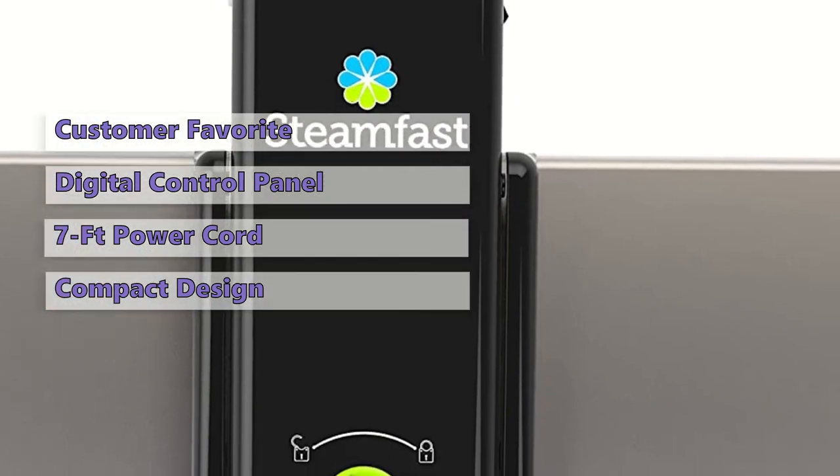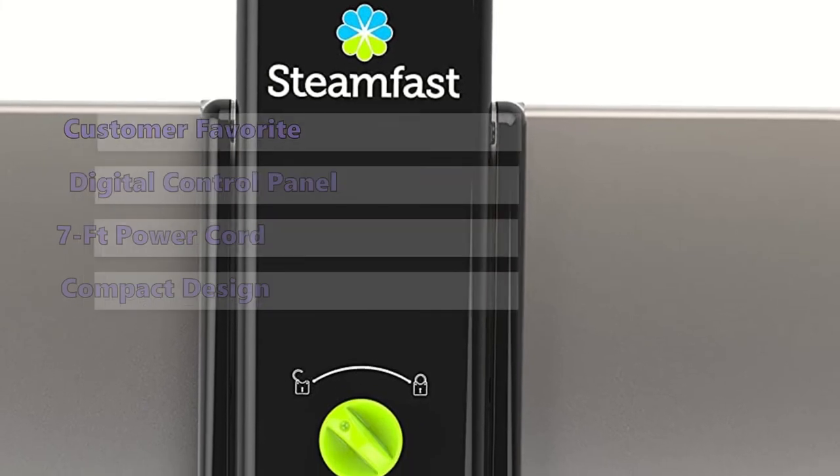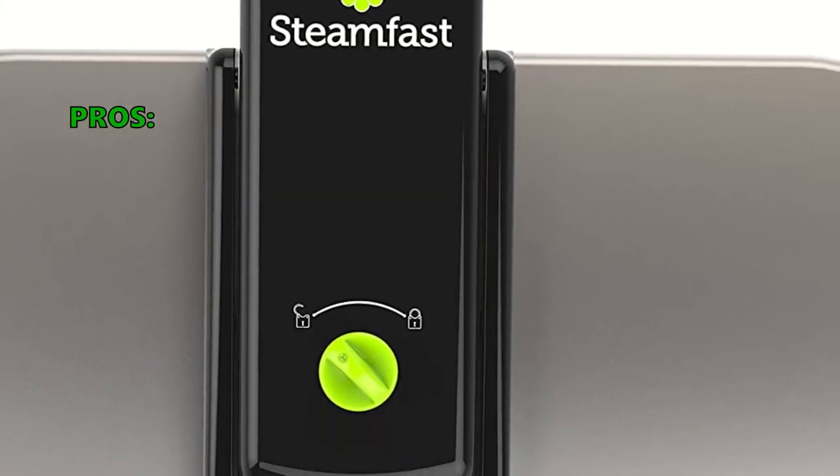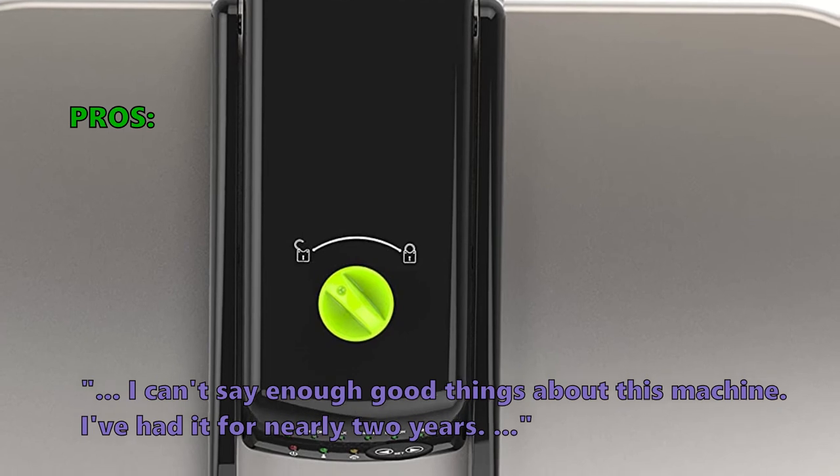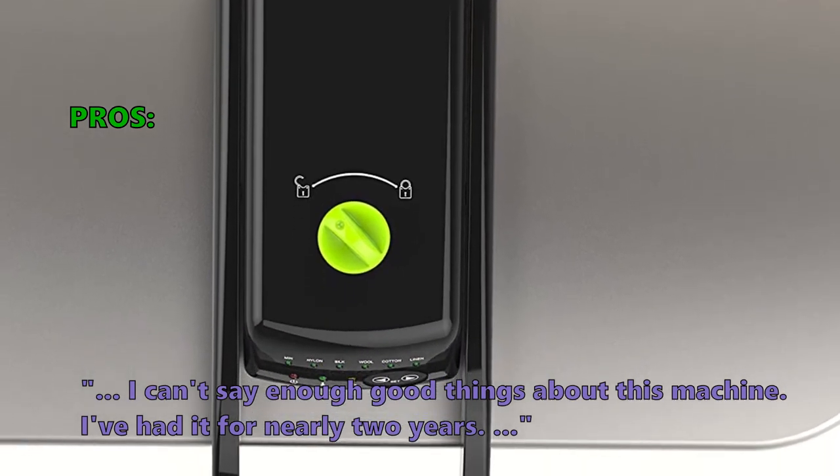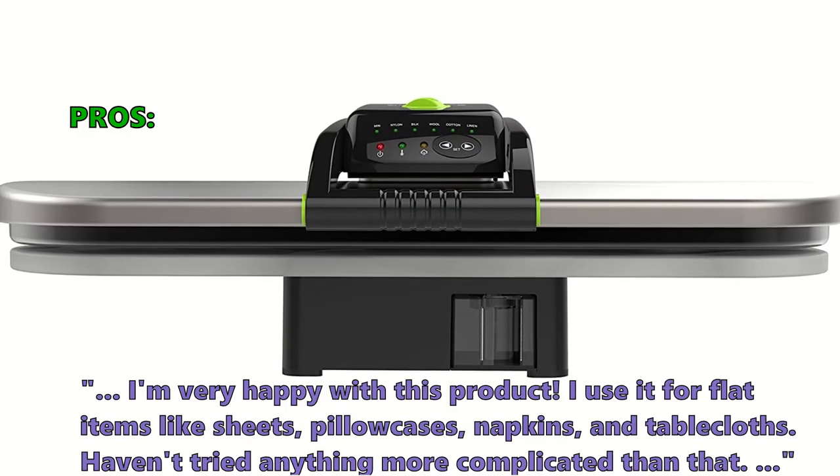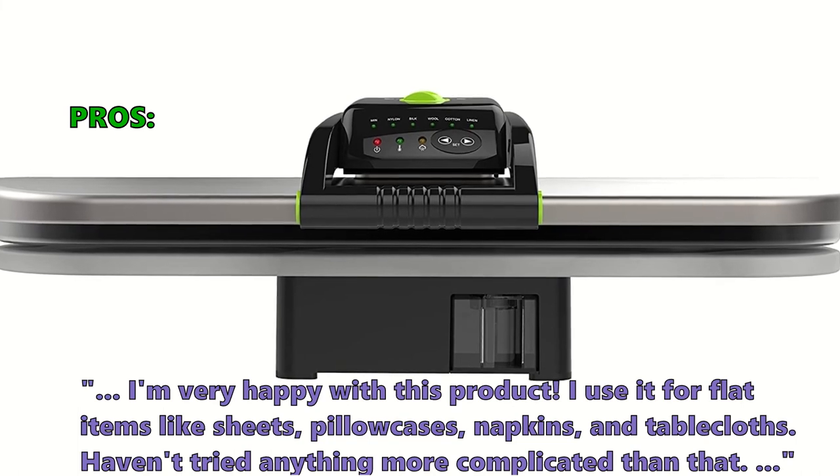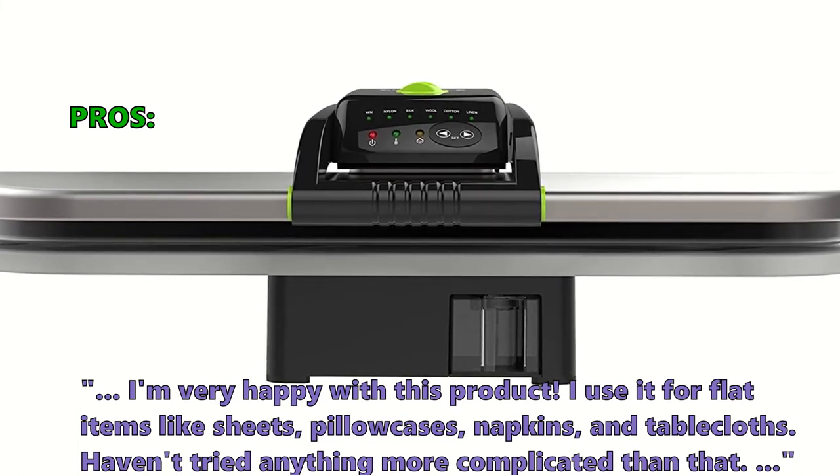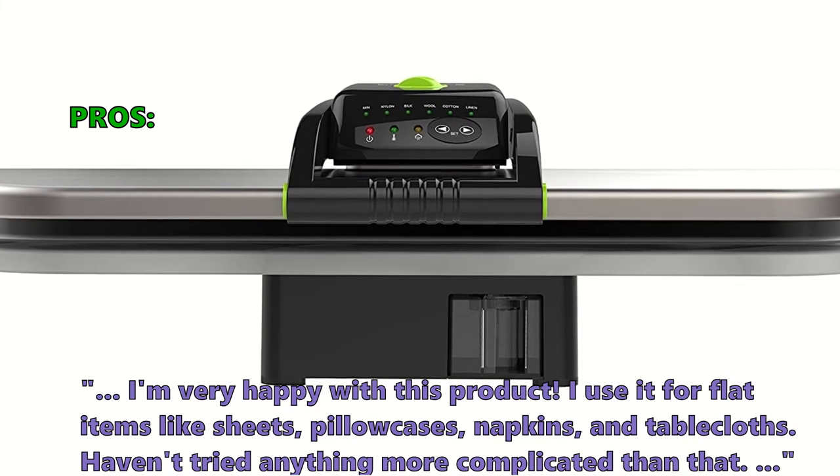We think that the SF-680 is the most versatile steamer we have looked at. Here is what customers love about it: I can't say enough good things about this machine. I've had it for nearly two years. I'm very happy with this product. I use it for flat items like sheets, pillowcases, napkins, and tablecloths.